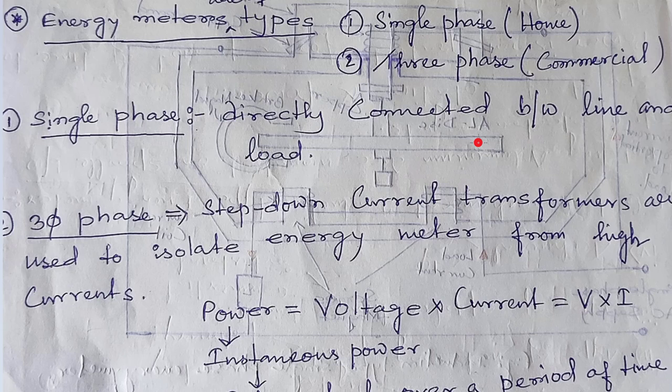Basically, energy meters are of two types: single phase and three phase. Single phase energy meter kahaan use hota hai? House mein. And three phase kahaan use hota hai? Industrial or commercial purpose ke liye.